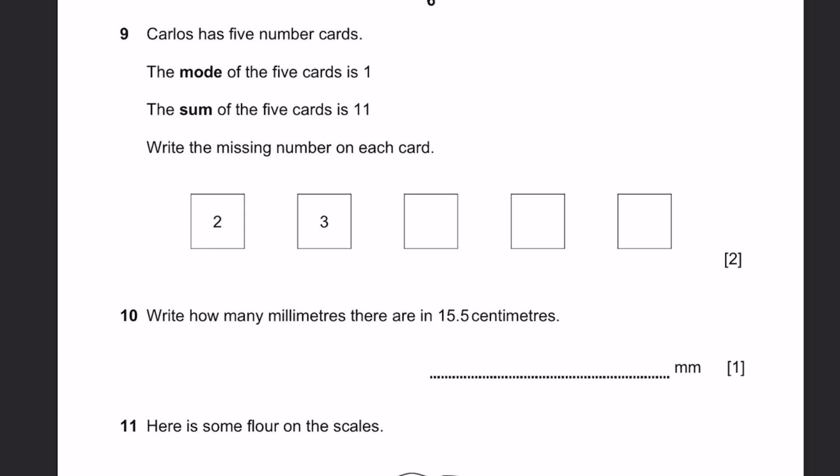Question 9. Carlos has 5 number cards. The mode is 1 and the sum is 11. Write the missing number on each card. So the mode is 1. That means there should be at least 2 ones over here. So I'll just write 2 ones. The sum is 11. So at least 5 we have 11. So far when we add it we get 7. So we need to add another 4 to get 11. So 4 is the last one.